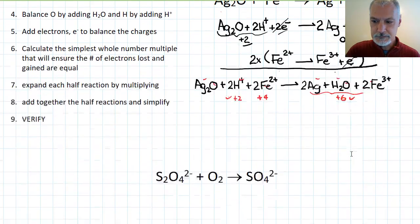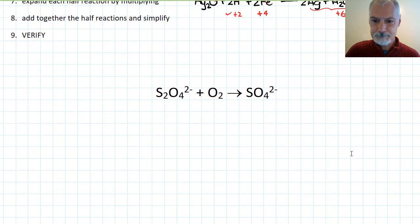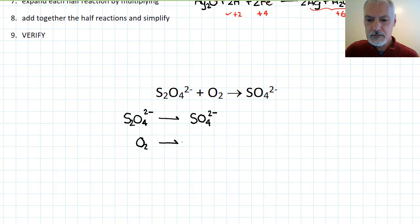Let's go through one that's a little bit more difficult. So in this particular case, my two half reactions, one of them is going to be S2O4 2- turning into the sulfate ion. And the other half reaction will be oxygen turning into, well we'll see how to do that one.